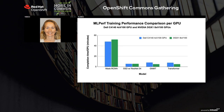Looking at these same numbers normalized per GPU: we did better for Mask R-CNN, did about equally well on SSD, and not quite as well on GNMT and Transformer when looking at it on a per-GPU basis.